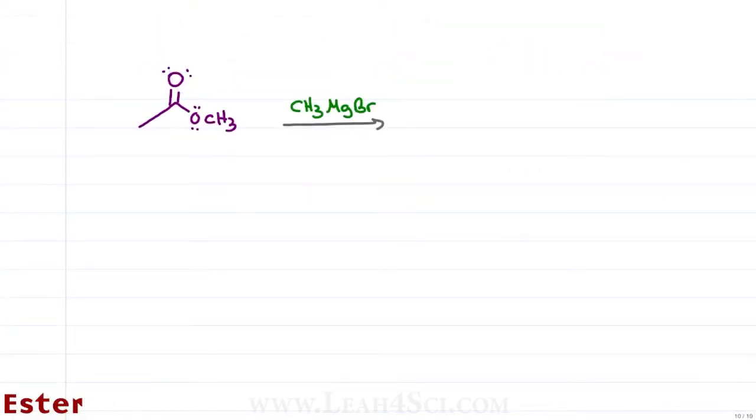The reaction starts out the same way where the Grignard carbon will attack the carbonyl, breaking the pi bond and collapsing those electrons onto oxygen. This gives me an oxygen with three lone pairs and a negative charge and a new bond to the Grignard's R group.